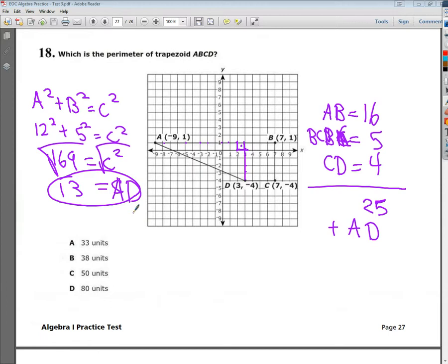That's the side for A, D. What they used to want to get you on is they would have 13 as one of the answers, but they're nice this time. So 25 plus 13 gives you a final answer of 38. So your answer to number 18 is B.